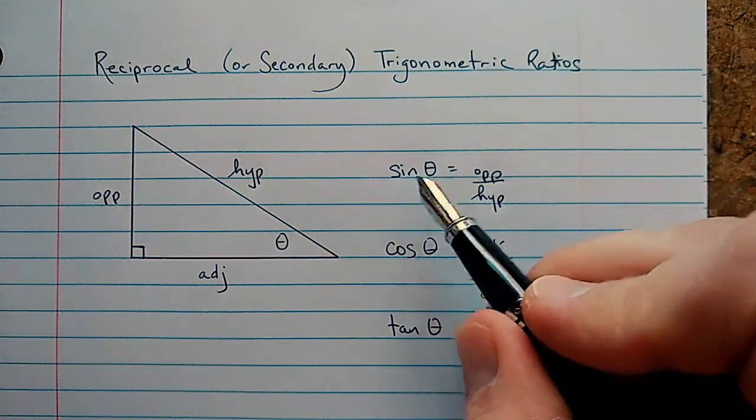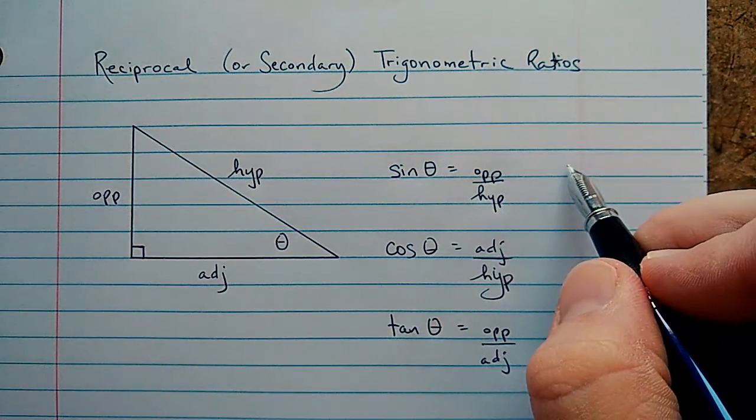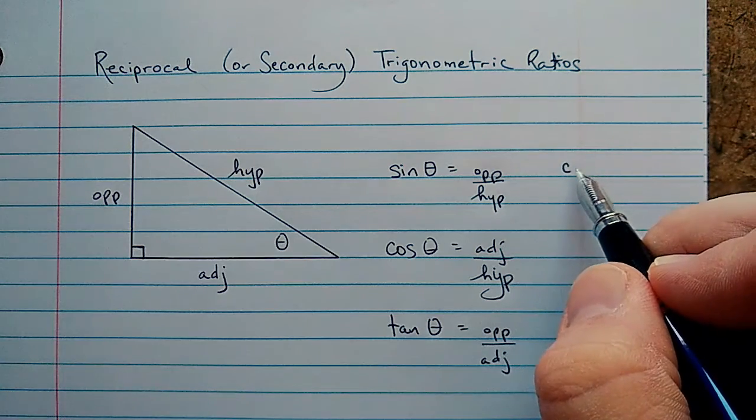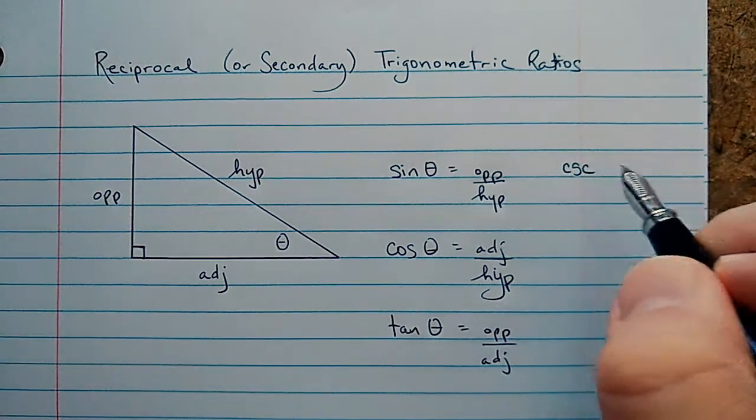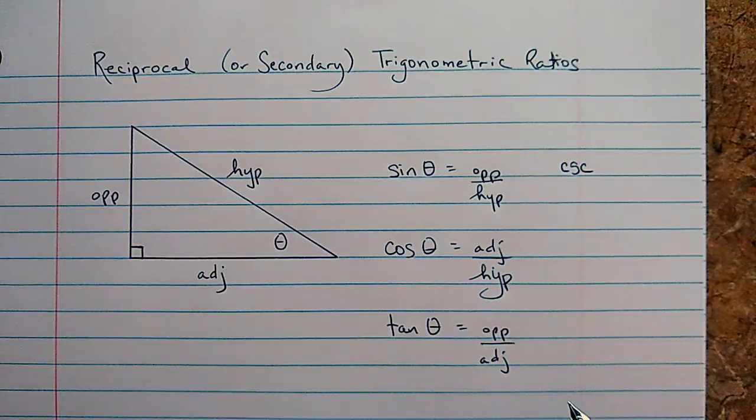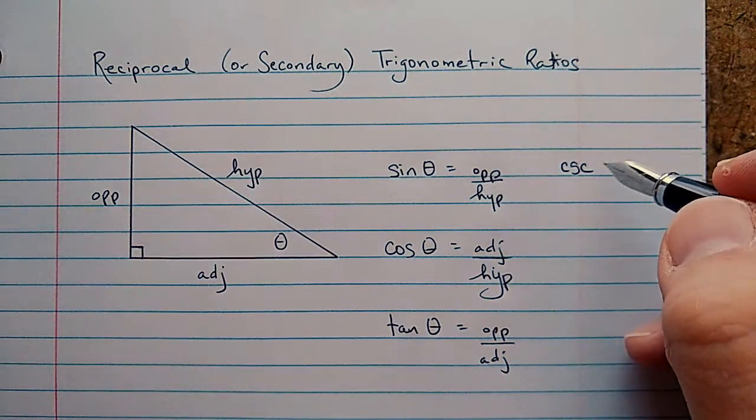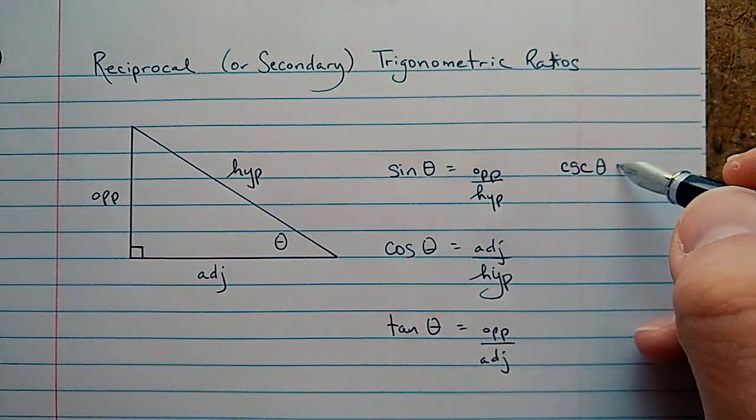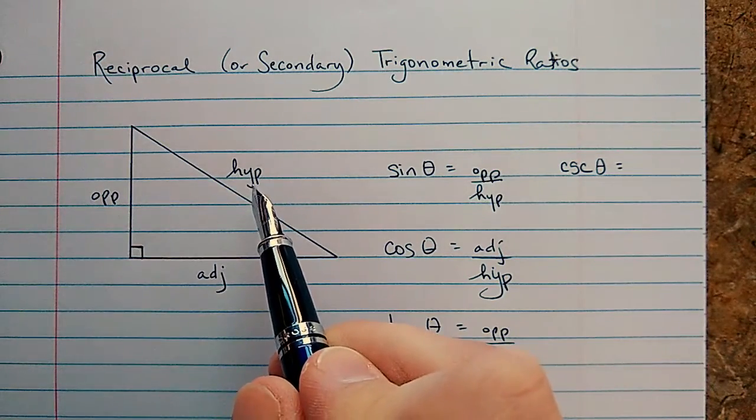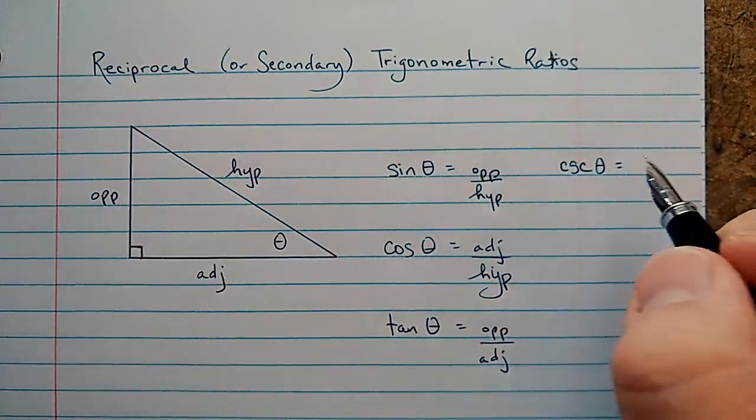Going along with the sine ratio, we have one called the cosecant, and I'll write this out in words in just a moment. But the short form is CSC cosecant. So the cosecant of theta is the hypotenuse divided by the opposite side length.